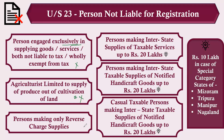Anyone making supplies on reverse charge basis is also not covered under registration. A person making interstate supplies of taxable services has a maximum limit of 20 lakhs. A person making interstate supplies of notified handicraft goods up to rupees 20 lakhs, and a casual taxable person making interstate taxable supplies of notified handicraft goods, also up to 20 lakhs. Note that for states like Mizoram, Tripura, Manipur, and Nagaland, the threshold limit changes to rupees 10 lakhs. For all other states it is 20 lakhs.